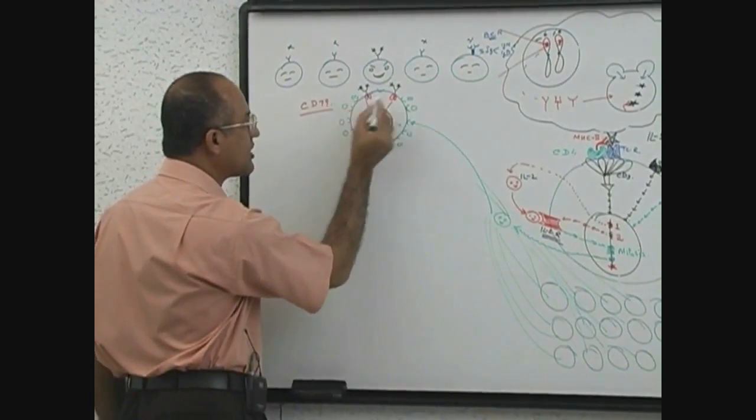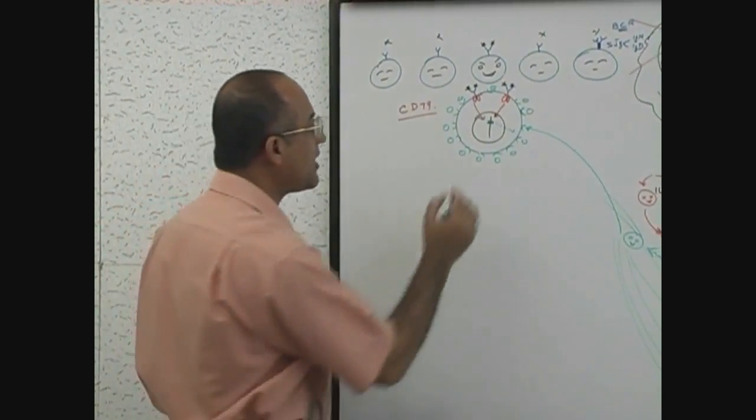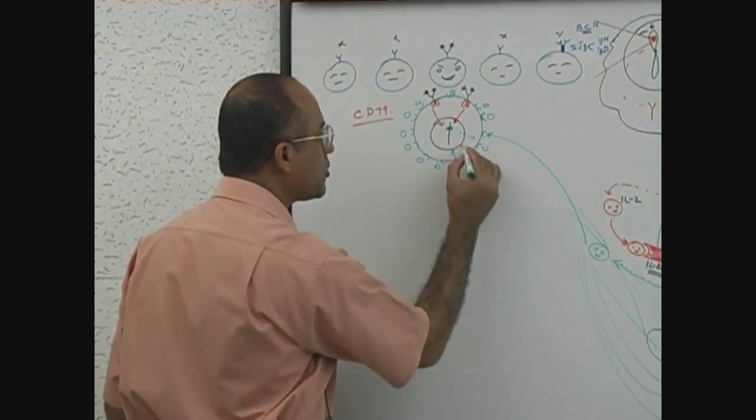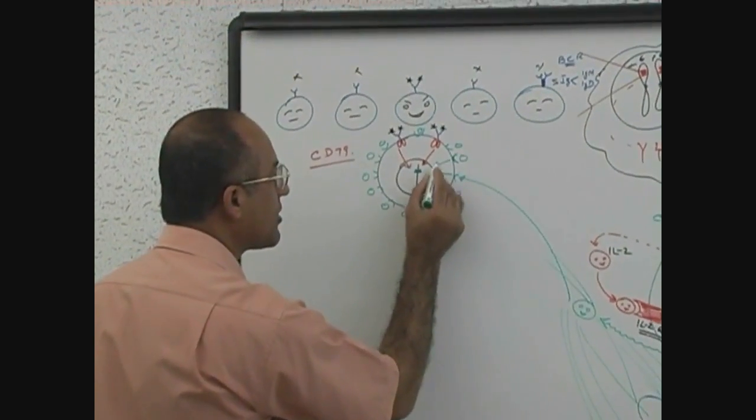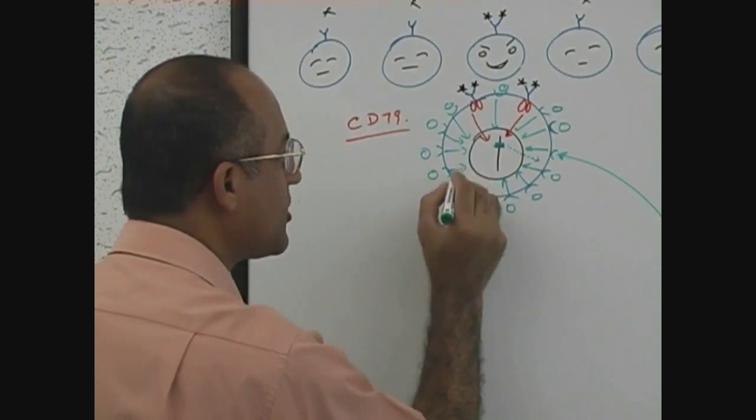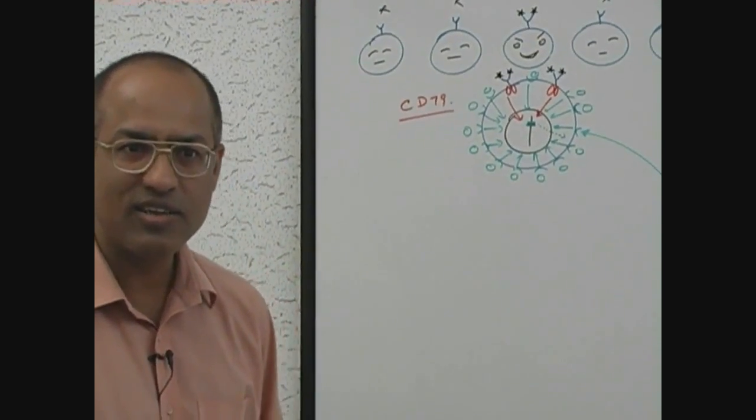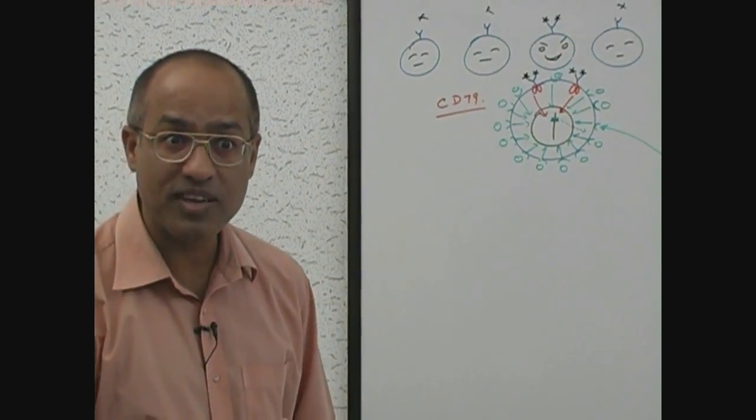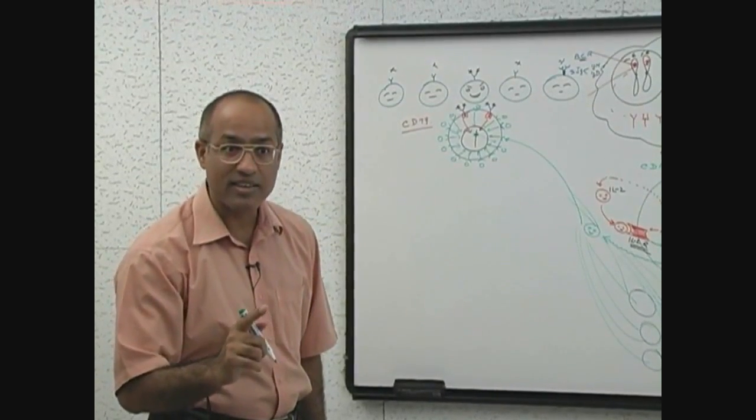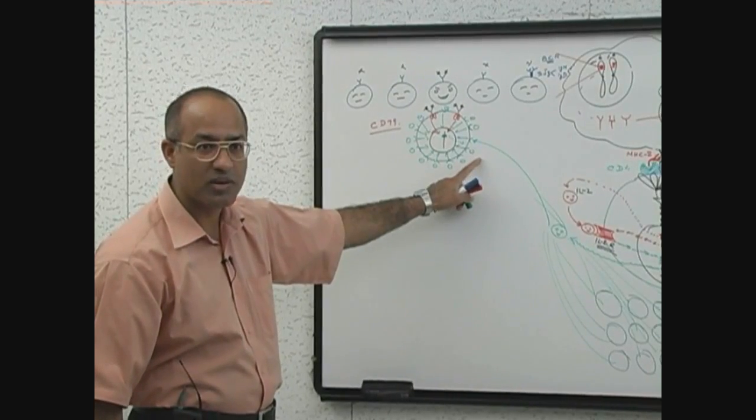When these T cell produced molecules bind with the B cells, all these give message to the nucleus of which cell? B cell. You know what is the message? The similar antigen, this message to the nucleus, the similar antigen has been presented in a very proper way to the T helper cells and T helper cells are sending these special molecules. I will tell you what are these molecules.